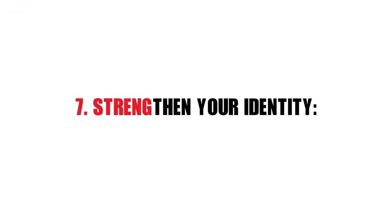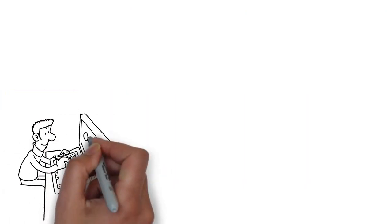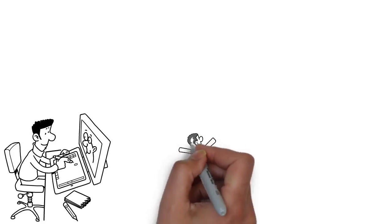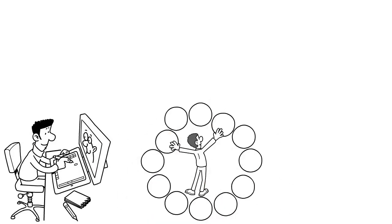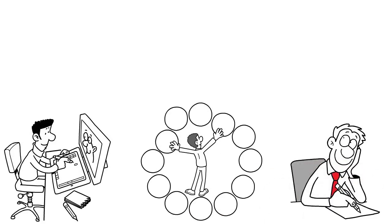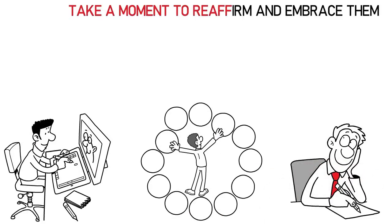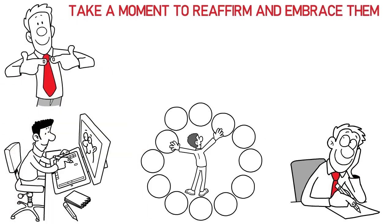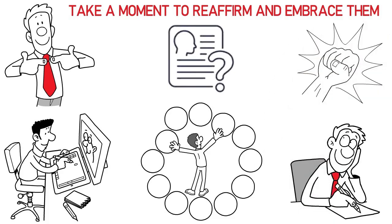7. Strengthen your identity. Dive back into your passions and hobbies that might have been overshadowed. Reconnecting with these interests helps you remember who you are at your core. Equally vital is to reflect on your core values and beliefs. Take a moment to reaffirm and embrace them, grounding yourself in what truly matters to you. Solidifying your identity is foundational to regaining power.